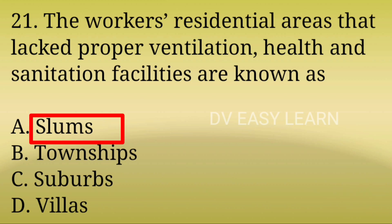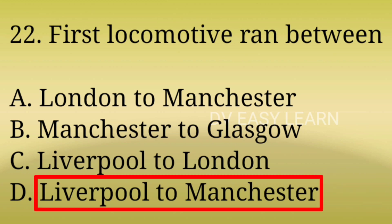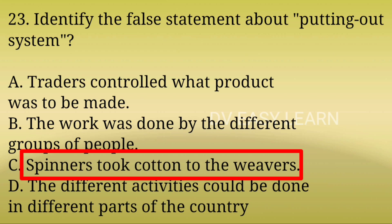Correct answer: Slums. 22nd Question: The first locomotive ran between? Correct answer: Liverpool to Manchester. 23rd Question: Identify the false statement about the putting-out system. Correct answer: The false statement is 'Spinners took cotton to the weavers'; the correct statement is 'The traders took cotton to the weavers.'